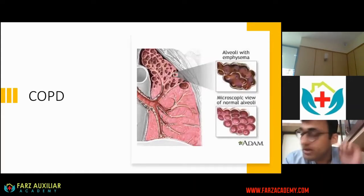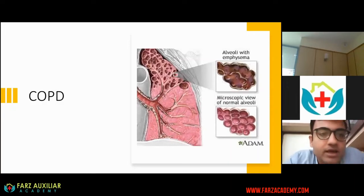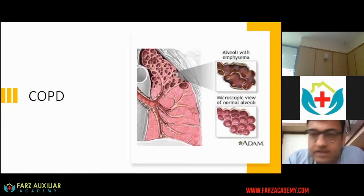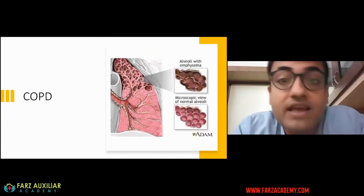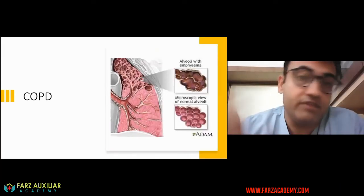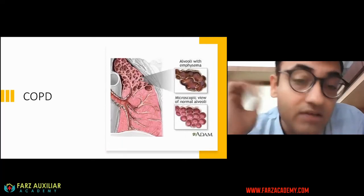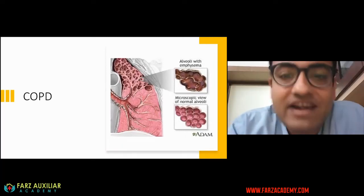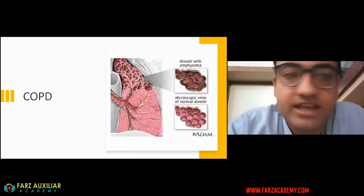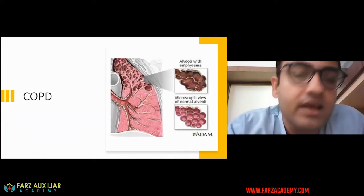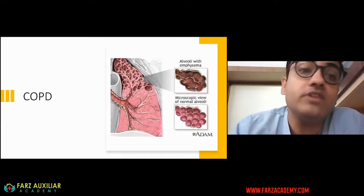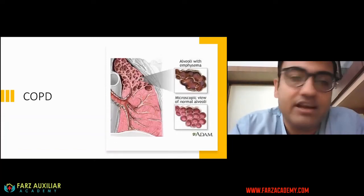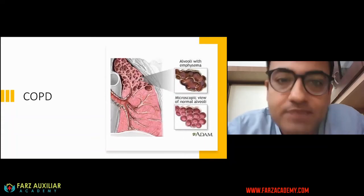COPD is actually a disease of the distal collapsible airways, and that is how it is different from the other element of obstructive airway disease — bronchial asthma — which is a disease of the more central and robust airways. In COPD, we are talking about the terminal airways, which are easily collapsible.